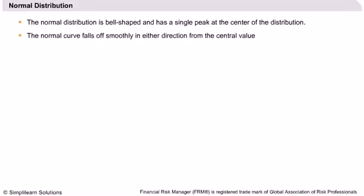The normal curve falls off smoothly in either direction from the central value, which is the mean of the distribution. So the normal curve is symmetric.